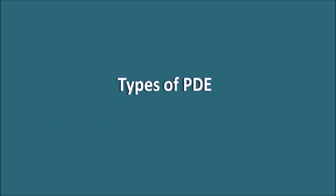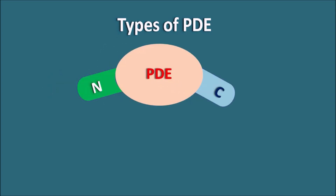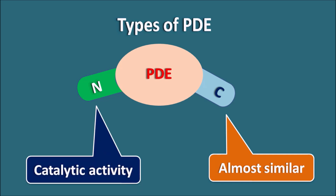Now let us see the different types of phosphodiesterase enzymes. Because these are protein enzymes, they have a C-terminal and an N-terminal. The C-terminal is almost similar in all types of phosphodiesterases, whereas the N-terminal is somewhat different and shows some catalytic activity. Based on the N-terminal, phosphodiesterases may be specific to cyclic AMP, cyclic GMP, or both.